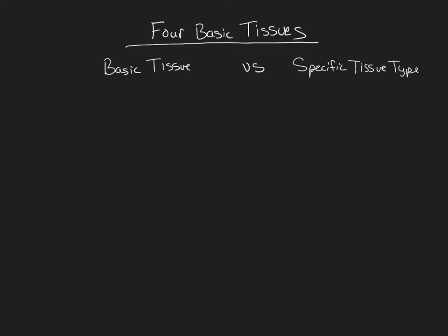Let's talk about our basic tissue types. We have four very basic tissue types in the body: epithelium, connective, muscular, and nervous.